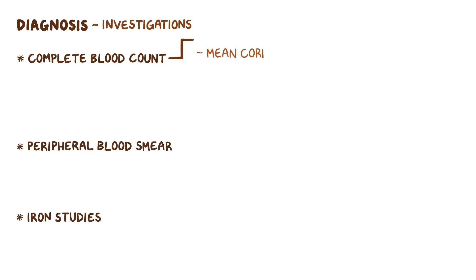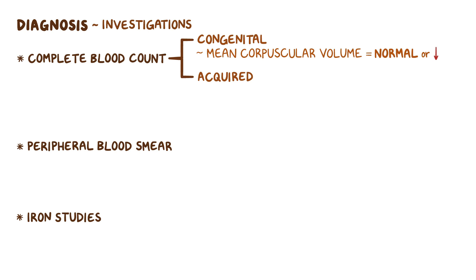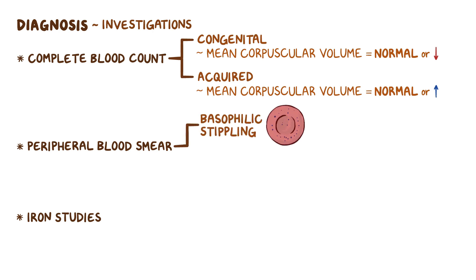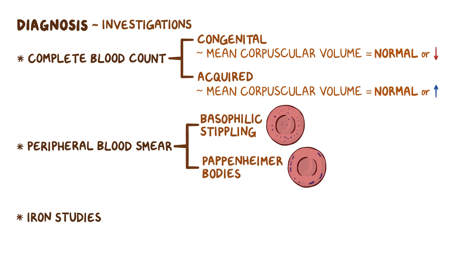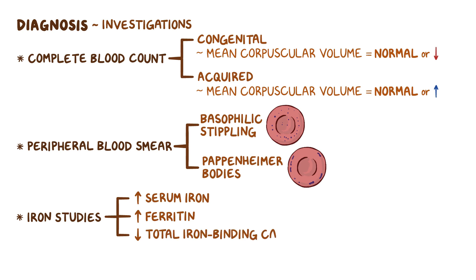On the full blood count, the mean corpuscular volume, which reflects the size of the red blood cell, is usually normal or low for the congenital causes. For acquired forms, the mean corpuscular volume is normal or high. On the peripheral blood smear, we would expect to see erythrocytes with basophilic stippling and Pappenheimer bodies, which are purple staining granules of iron found inside RBCs. Iron studies will show high serum iron, increased ferritin levels, and decreased total iron binding capacity.